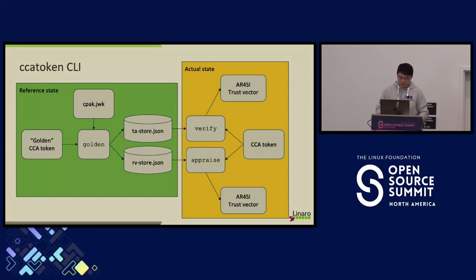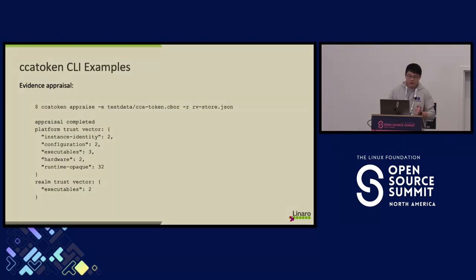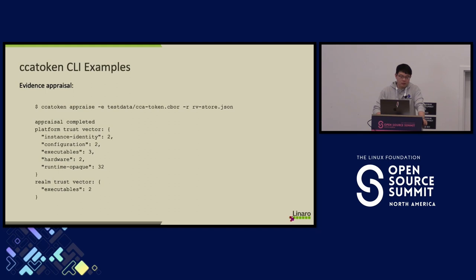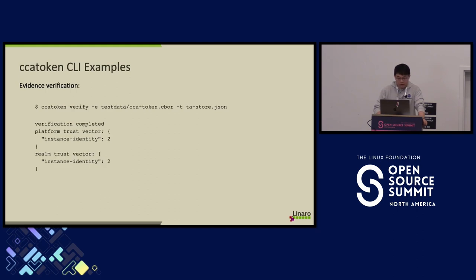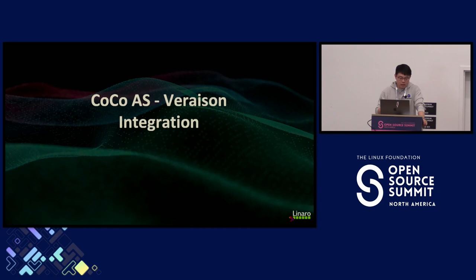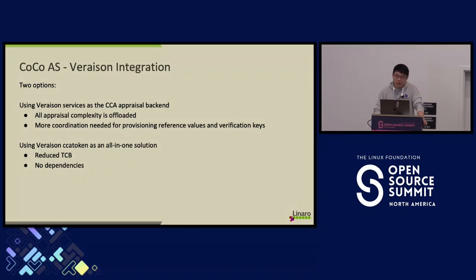There are two options for doing COCO remote attestation. The first is using Veraison. We can offload all token verification and appraisal to the remote Veraison service. Veraison runs remotely and has nothing to do with the local COCO environment — similar to how Intel Amber works. However, one concern is a potential bottleneck for the attestation service access, since the service is under external control.